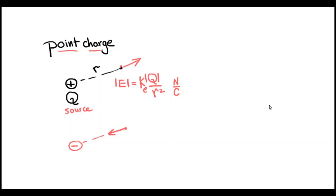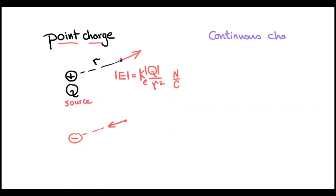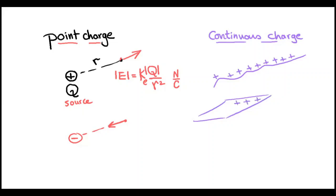What about continuous charges? A continuous charge is an expression to describe that the charge is distributed over a large object. For example, a wire that is charged all over its length, or a sheet that is uniformly charged with charge on every piece of its area. The charge is distributed over large objects like a wire, a sheet, or a ring. Unlike a point charge, which is localized in a very tiny object, here the charge is spread out.